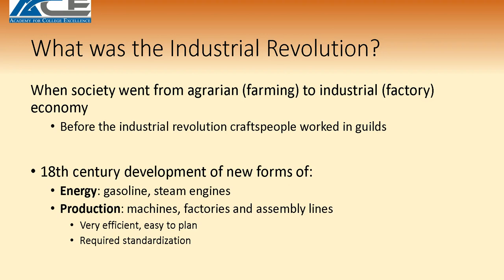So what did you think of that information? Let's review a little bit. What was the Industrial Revolution? Basically, we used to be a bunch of farmers — it's called an agrarian society. At the point of the Industrial Revolution, as technology improved and increased, we became more of an industrial economy with a lot of factory workers.